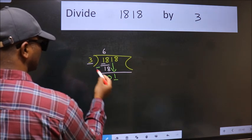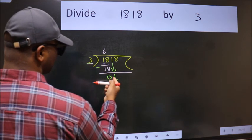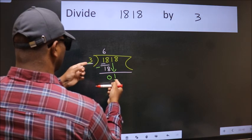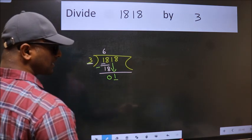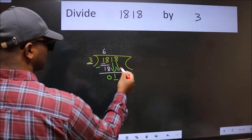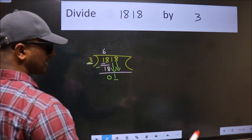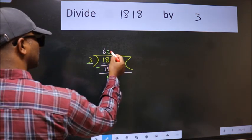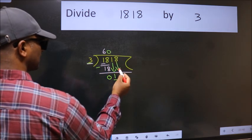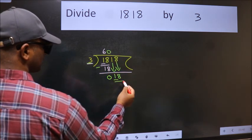Now here we have 1 and here 3. 1 is smaller than 3. So we should bring down the second number. And the rule to bring down second number is put 0 here. Then only we can bring this number down. So 18.